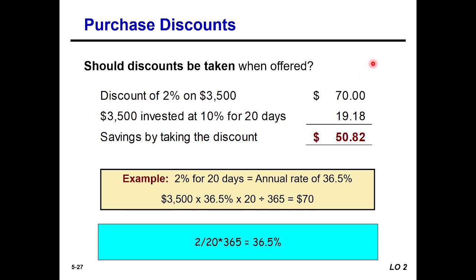Should the discount be taken when offered? The discount saves $70. If instead the buyer invests $3,500 elsewhere at 10% profit for 20 days, that yields only $19.18. So the saving by taking the discount is $53.82. The annualized discount percentage works out to 36.5%, making it clearly better to take the discount offer.